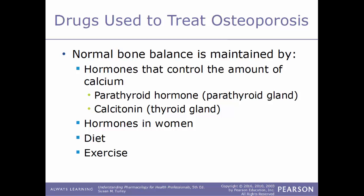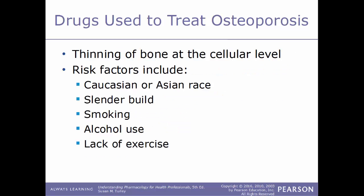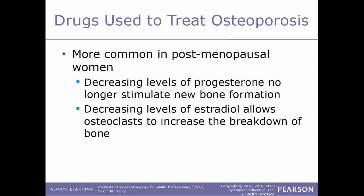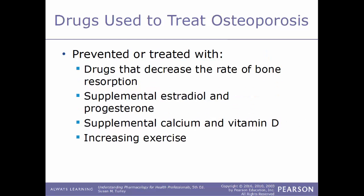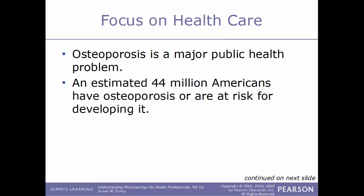Exercise builds stronger bones as well as stronger muscles. Osteoporosis is the thinning of bone at the cellular level. Risk factors include being Caucasian or Asian, having a slender build, smoking, alcohol use, and lack of exercise. The most well-known risk factor is being a postmenopausal woman: decreasing levels of progesterone no longer stimulate new bone formation, and decreasing levels of estradiol allow osteoclasts to increase bone breakdown. This can be prevented or treated with drugs that decrease the rate of bone resorption, supplemental estradiol and progesterone, supplemental calcium and vitamin D, and increasing exercise.